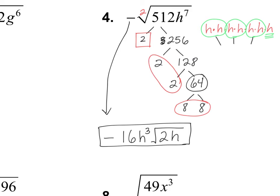The trick is that when you are dealing with variables: if you have an even number of variables, you'll just take out half of them. If you have an odd number like what we had here, think about one less — so one's going to be left inside. That means we're down to six of them, and then you take half of that, so you're taking out three. That's the little trick of the trade for variables when you're dealing with square roots.